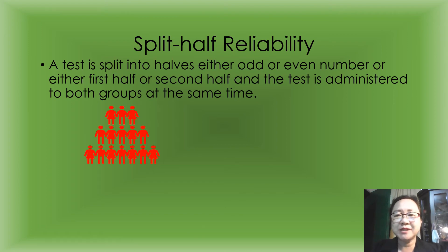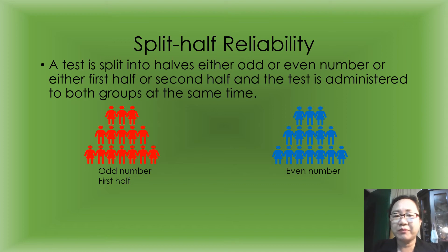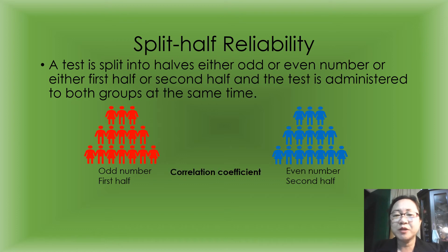For example, the first group is labeled as odd number or the first half, and the second group is labeled as even number or second half. We then correlate the scores of the odd-number group and the even-number group using the correlation coefficient.